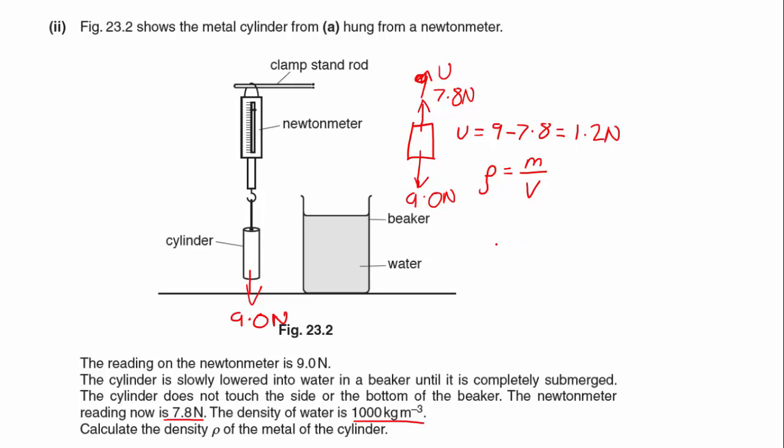The mass of the water is going to be the weight divided by g, which is 9.81. So my volume is going to be 1.2 divided by 9.81 divided by the density which is 1000, and that will give me an answer of 1.2232 × 10⁻⁴ m³.